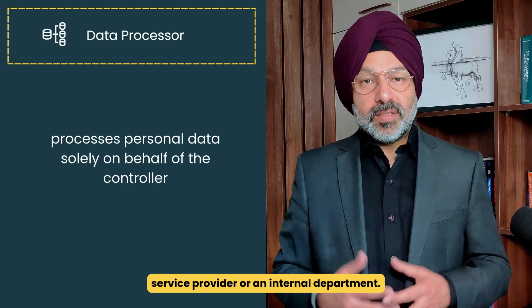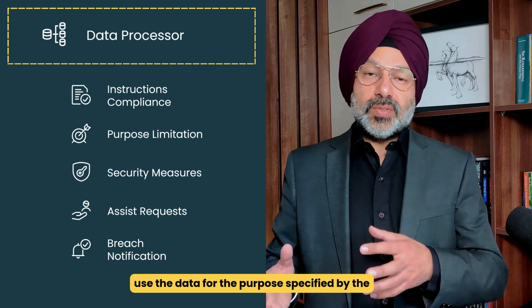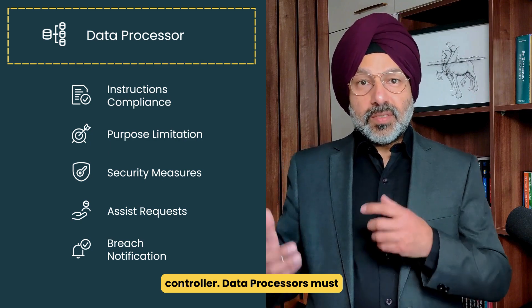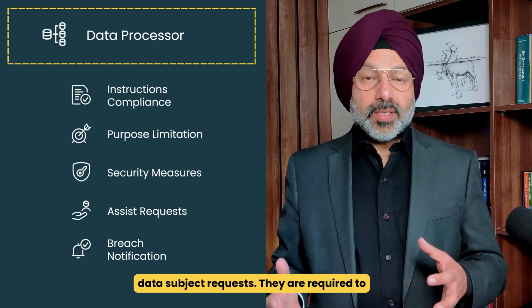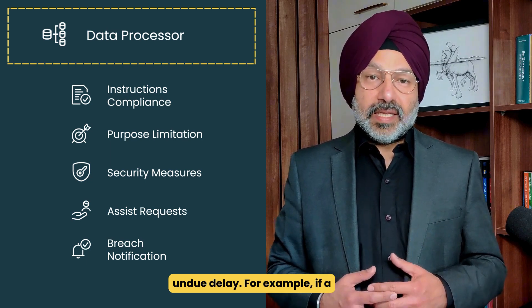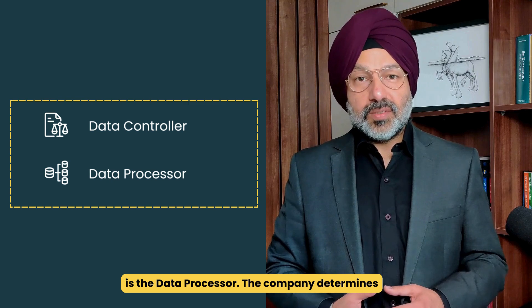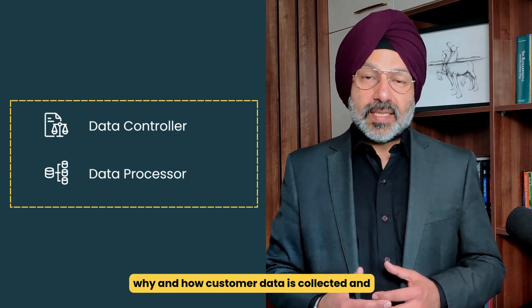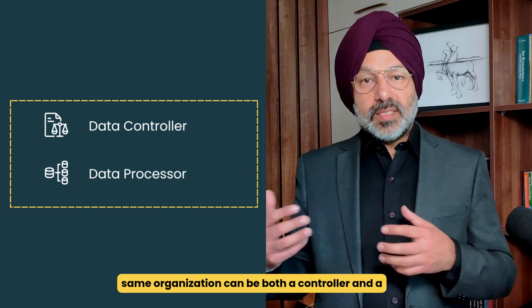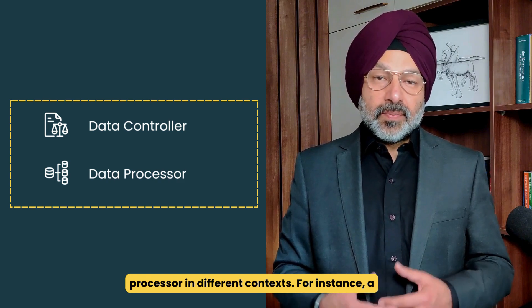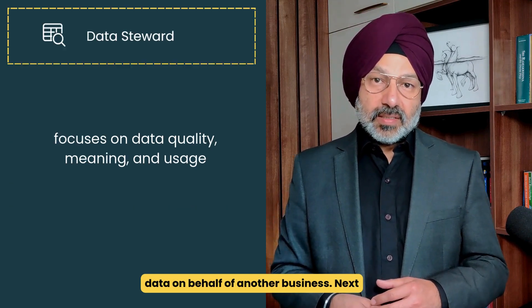Controllers must also be accountable for demonstrating compliance with data protection principles. The data processor processes personal data solely on behalf of the controller — this could be a third-party service provider or an internal department. Data processors must follow the controller's documented instructions, use data only for the purpose specified by the controller, implement appropriate security measures, assist controllers in fulfilling data subject requests, and notify controllers of data breaches without undue delay. For example, if a company uses a cloud service provider to store customer data, the company is the data controller while the cloud provider is the data processor. Notably, the same organization can be both a controller and a processor in different contexts.